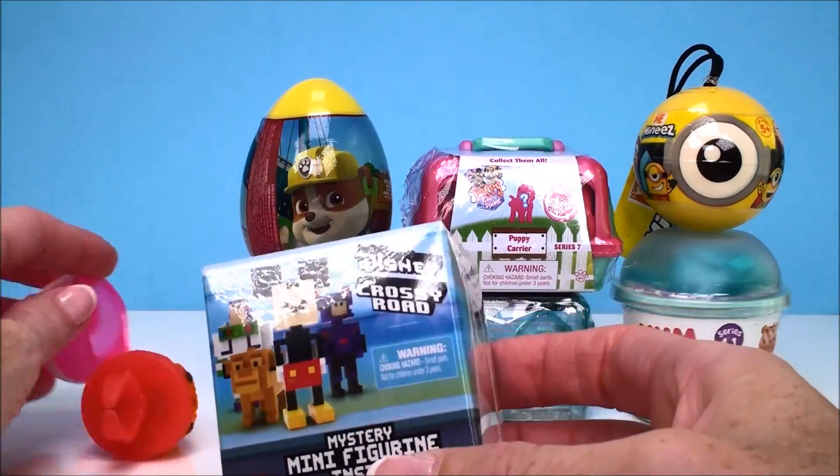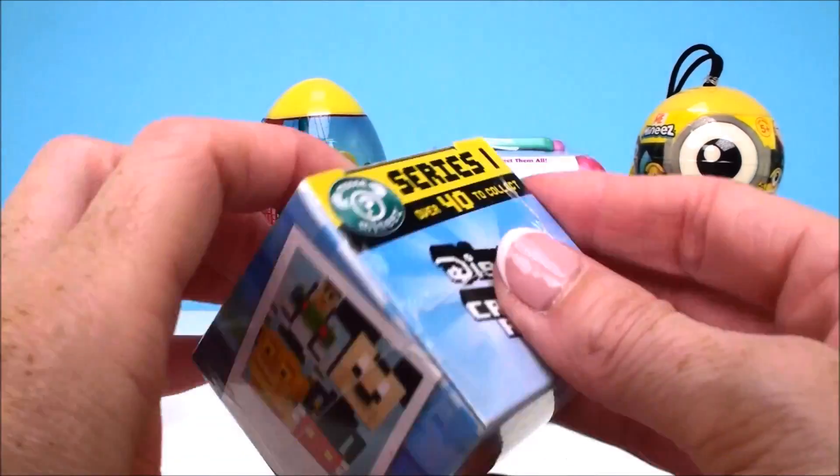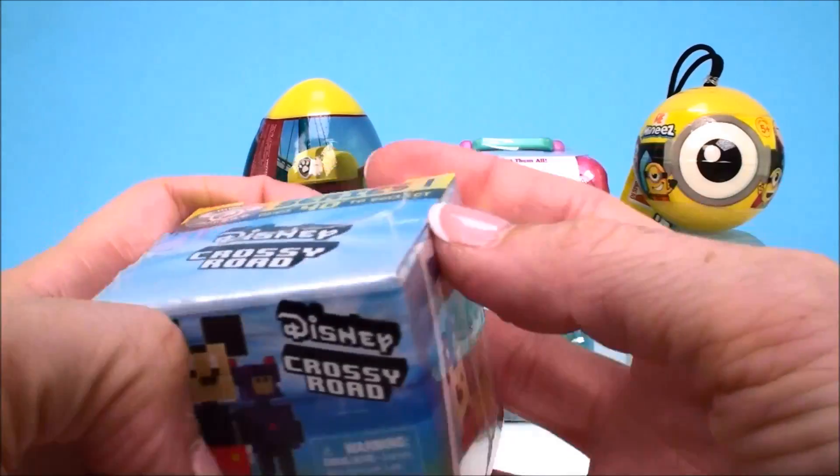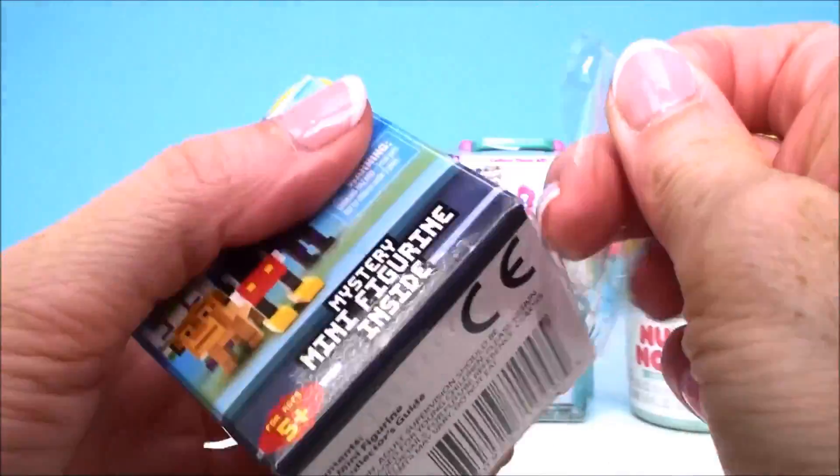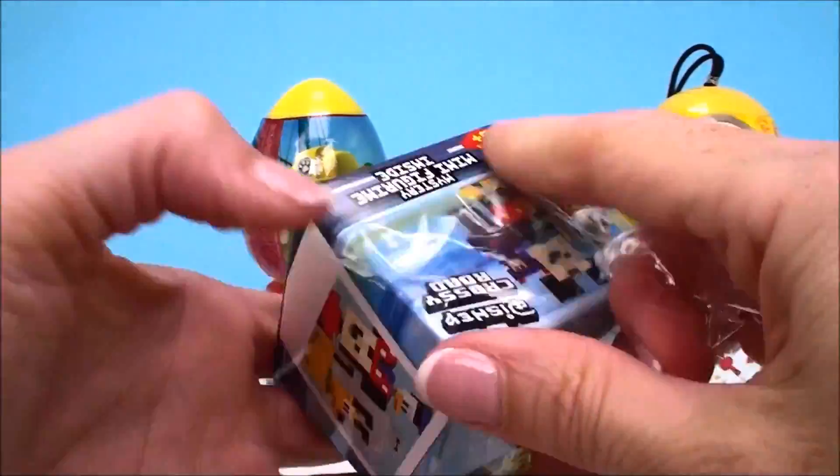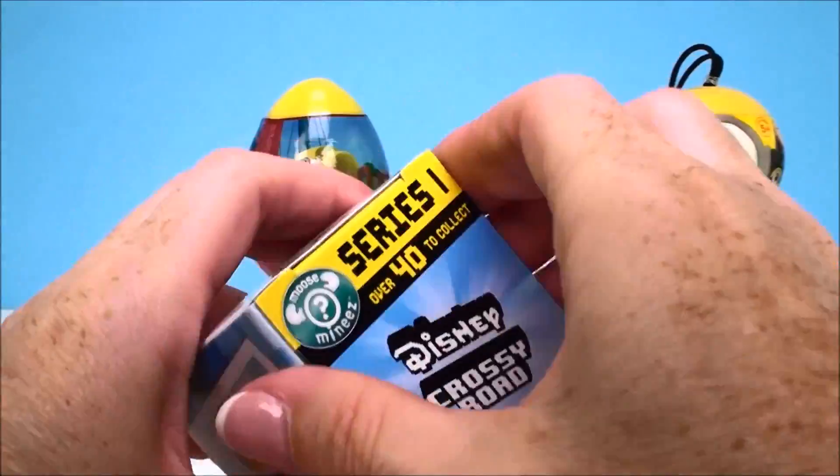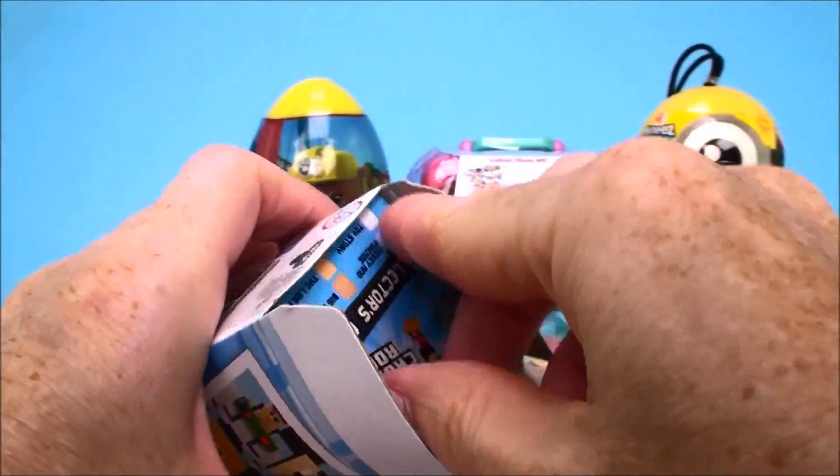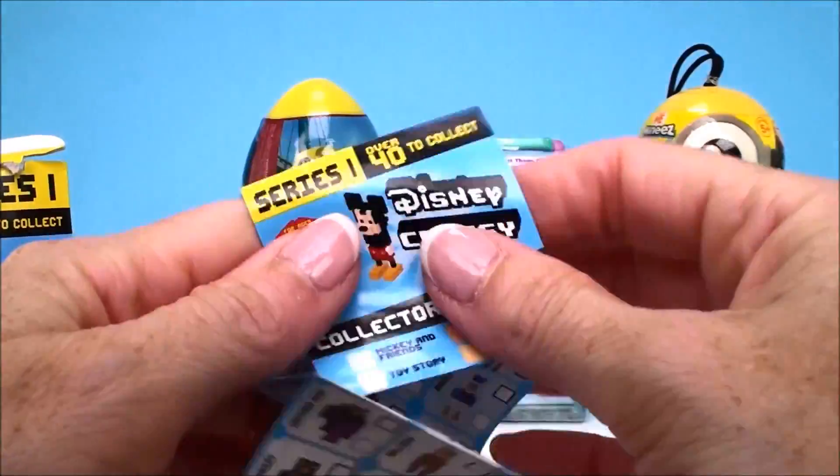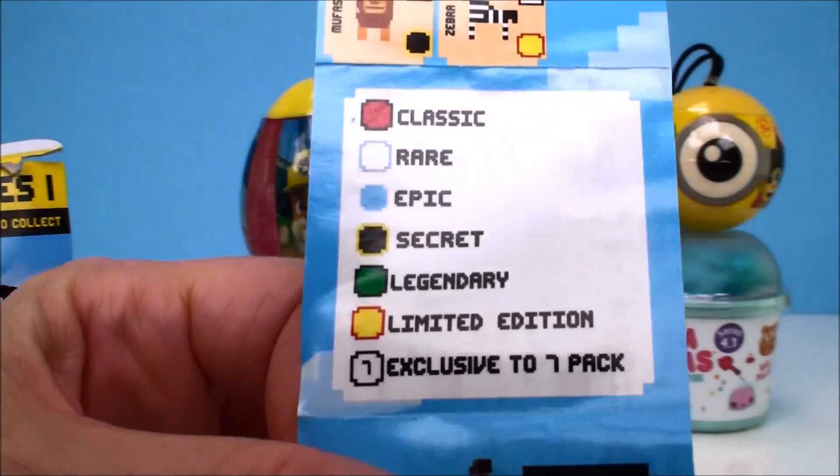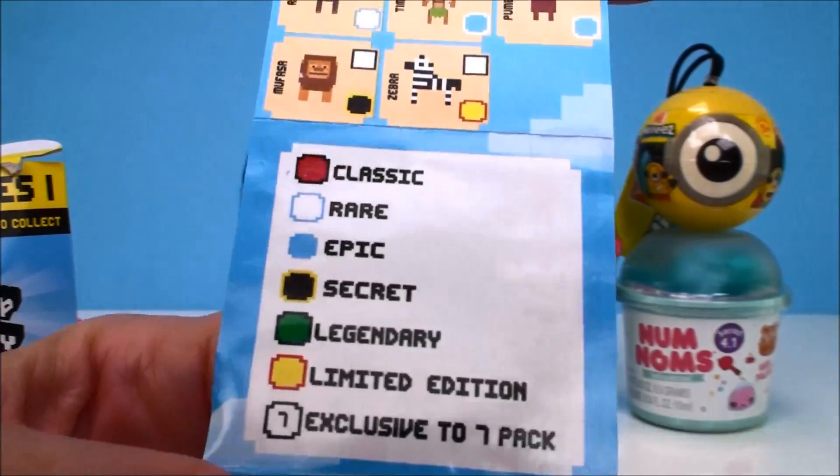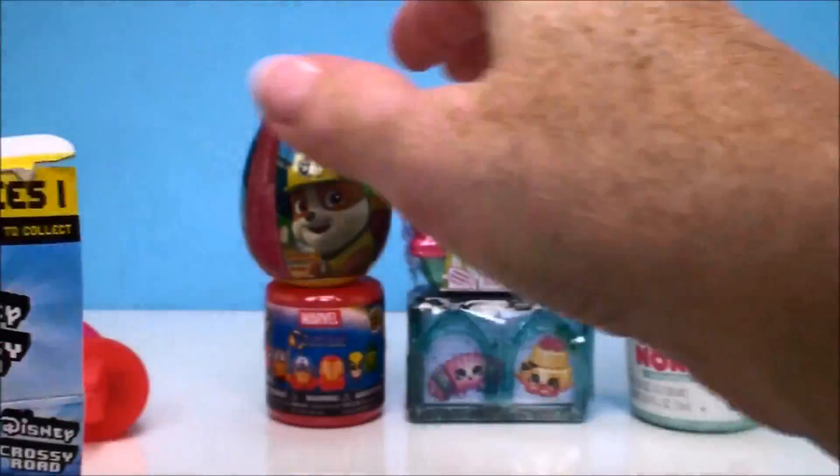But let's move on to our Disney Crossy Road minifigure. Super cute. Love this game and I love that they have a Disney edition. Always makes it more fun when you're playing with your favorite characters. So there are over 40 of these to collect in series one. It comes with a little collector's checklist and it shows all the different characters you can get and it shows you how common or rare they might be.